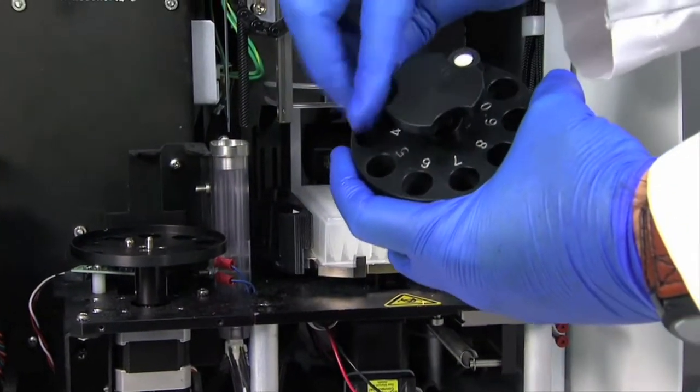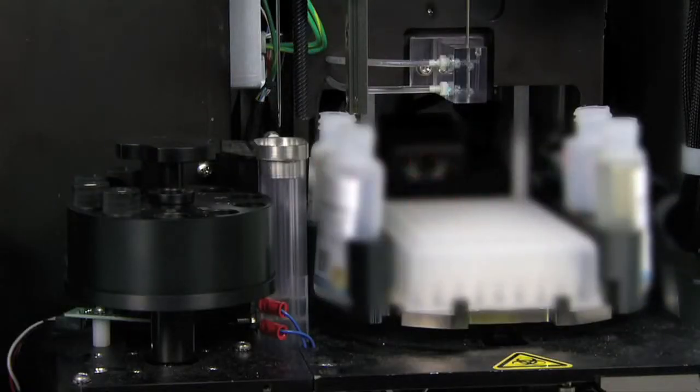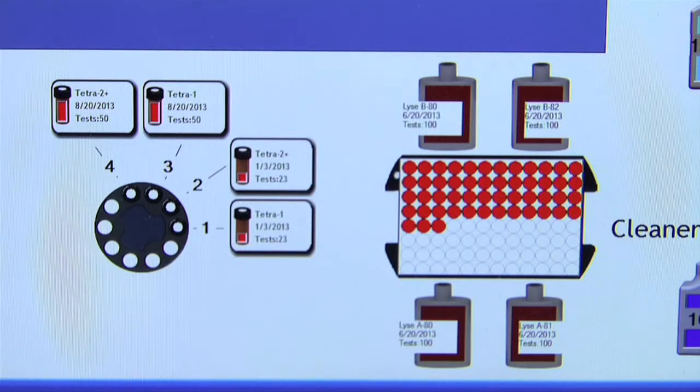When the reagents are loaded onto Acquios, the system automatically scans them in order to track which reagents are on board, the lot number, open and closed vial expiration dates, and how many tests are left in each vial.